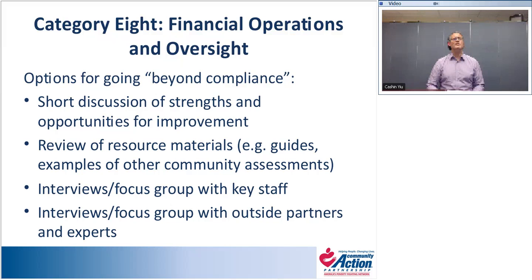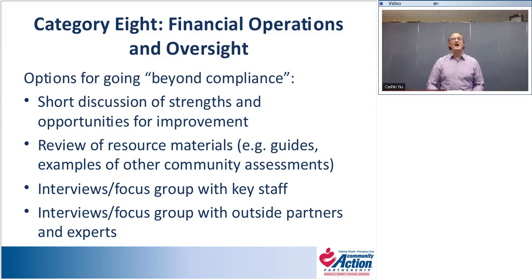In some cases, an agency might want to hold interviews or a quick focus group with outside partners and experts. Especially around financial operations and oversight, this might be a good idea to get an outside set of eyes to review policies and procedures and provide recommendations, because having a stable financial system and clear policies and procedures is incredibly important to the agency's overall stability and fiscal health — particularly if there have been audit findings, budget expansions or contractions.